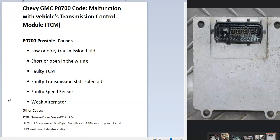The first thing you should do when you get this code is check whether you have any other codes, because those will help point you to the actual problem. For example, a P0747 code alongside this one points to a solenoid problem in the transmission, while a U0100 code points more toward a wiring issue.